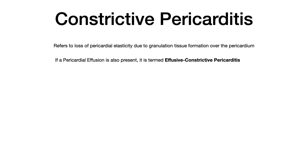Thus far we've talked about pericarditis — terminology, etiologies. For the most part, most of those etiologies cause acute pericarditis, meaning you experience pericarditis without an effusion for less than three months. Now we're going to talk about what happens as the pericarditis becomes more chronic — going three-plus months — and what happens when that inflammation progresses longer term. So let's transition into constrictive pericarditis.